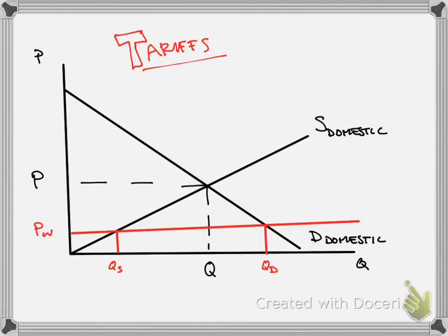So let's continue our discussion of international trade. We're going to look at what happens when the price of the world is below the domestic price. We talked before that this creates imports, meaning that the quantity demanded is greater than quantity supplied and that difference is being met by importing countries.